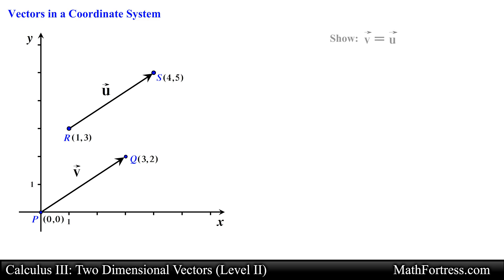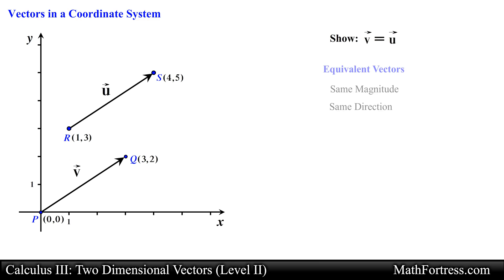As an example, say that we are asked to show that vector v and vector u are equivalent. How can we use the directed line segment representation of vectors to determine if they are equivalent? Let's start with the definition of equivalent vectors: in order for two vectors to be equivalent, both their magnitude and direction have to be the same.